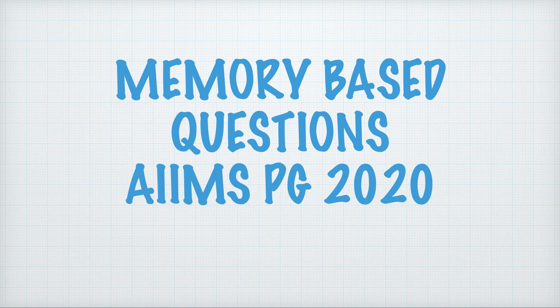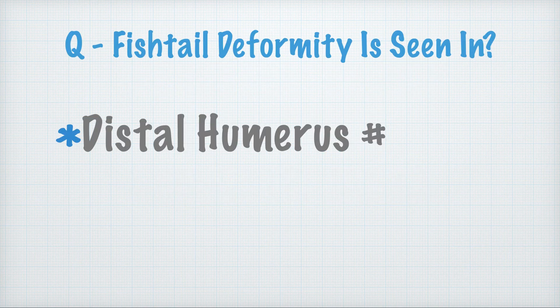Hello doctors, here are some memory based questions from AIMS PG 2020. The first one is fishtail deformity — it is an easy question and is seen in distal humerus fracture.